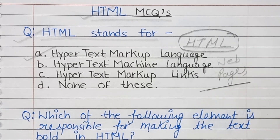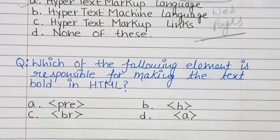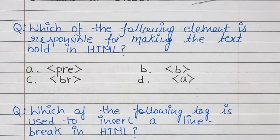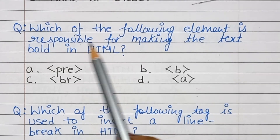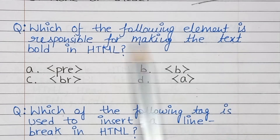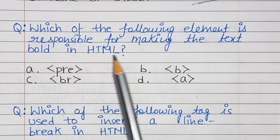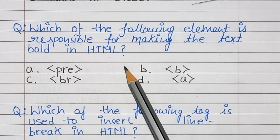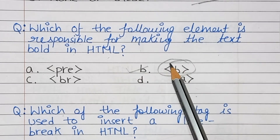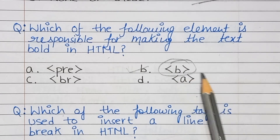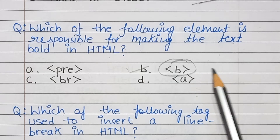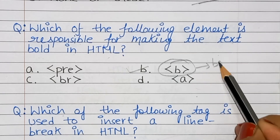Next question: Which of the following elements is responsible for making text bold in HTML? Which tag do we use for bold? The answer is option B — the B tag. The bold tag in HTML is used to display text in bold format.